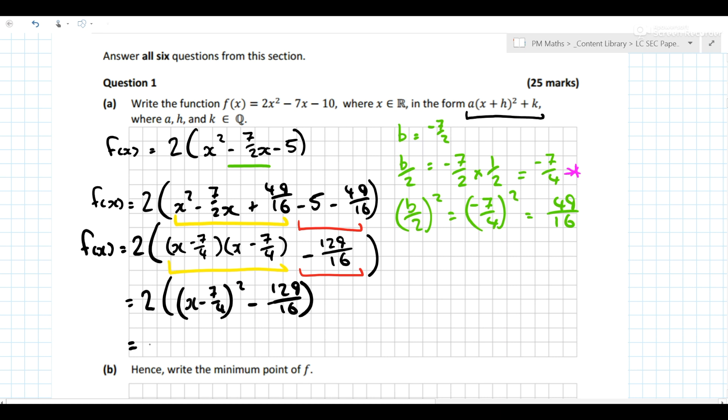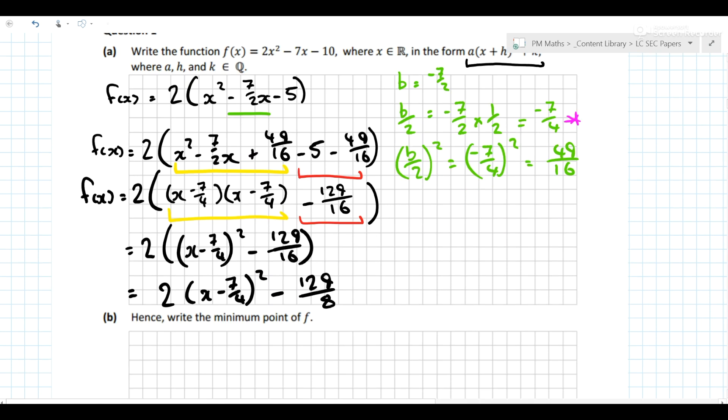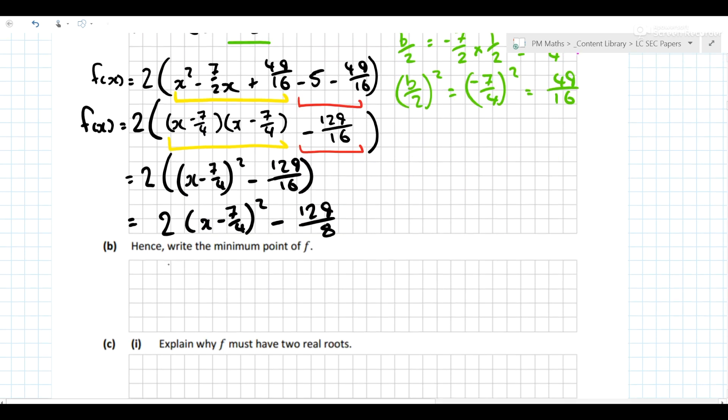Multiply in the 2: 2(x - 7/4)² - 129/8. And that's it in completed square form. Now the next question says 'hence write the minimum point of the function.' The reason it's also called vertex form is because...